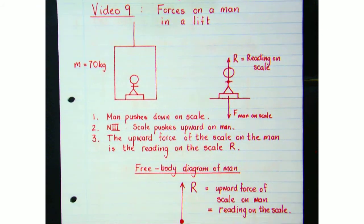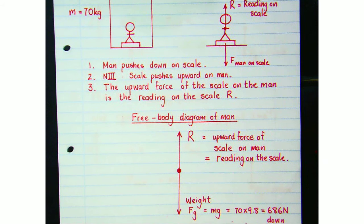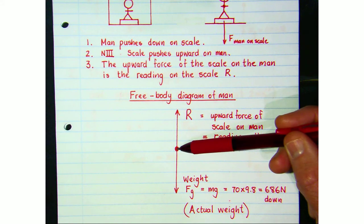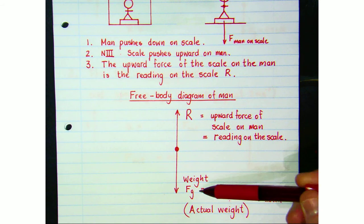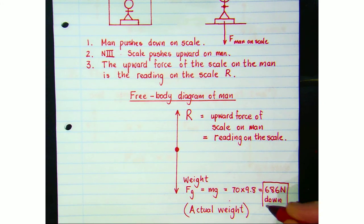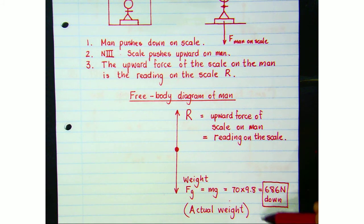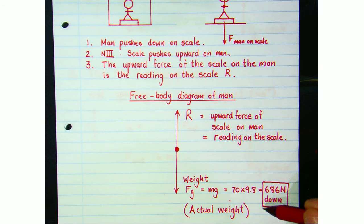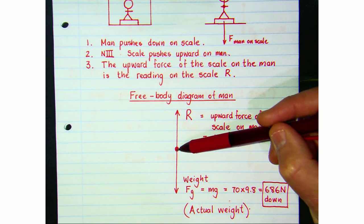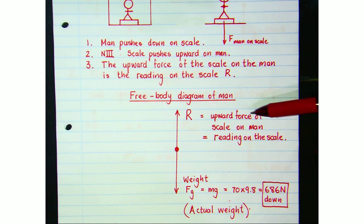Looking at the free body diagram of the man, he has two forces acting on him: his weight acting downwards and the upward force R from the scale. We calculate his weight as mass times gravitational acceleration: 70 × 9.8 = 686 Newtons downwards. His weight is constant — it won't change as long as he remains on the surface of the Earth.